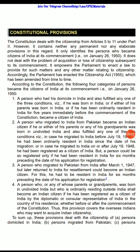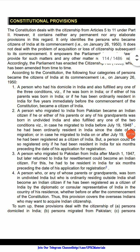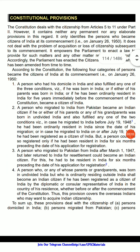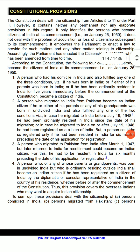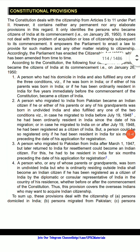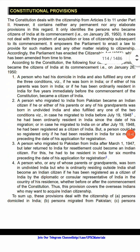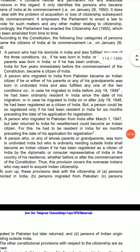Accordingly, Parliament enacted the Citizenship Act of 1955, which has been amended from time to time. According to the constitution, the following categories of persons became citizens of India at its commencement on January 26, 1950. First, a person who had his domicile in India and fulfilled any one of three conditions: he was born in India, or either of his parents was born in India, or he had been ordinarily a resident of India for five years immediately before the commencement of the constitution.